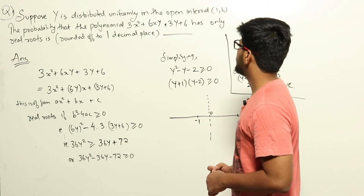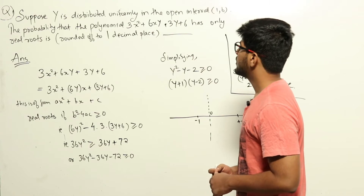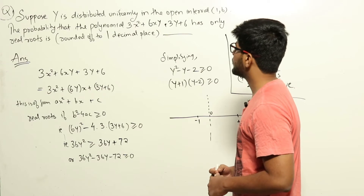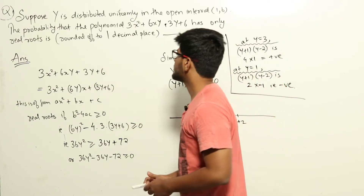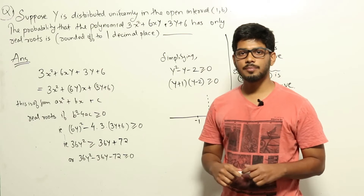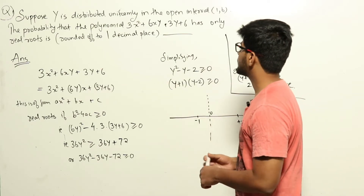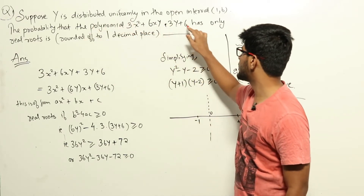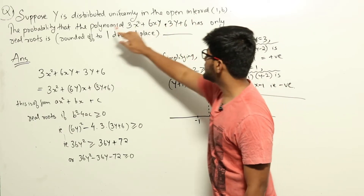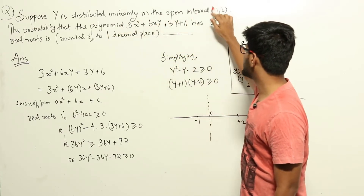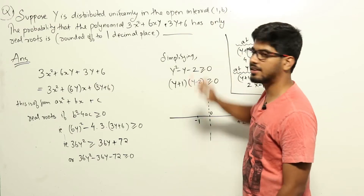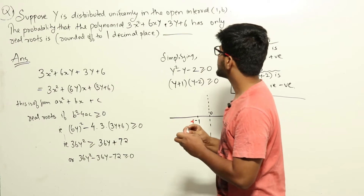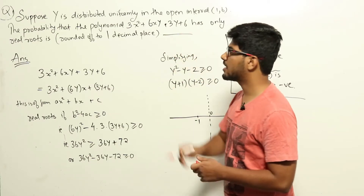Suppose y is distributed uniformly in the open interval 1 to 6. The probability that the polynomial 3x² + 6xy + 3y + 6 has only real roots is, to 1 decimal place. This is a question from engineering mathematics, given in a tricky way. y can take any real value between 1 and 6, and we want the probability that the polynomial has real roots only.